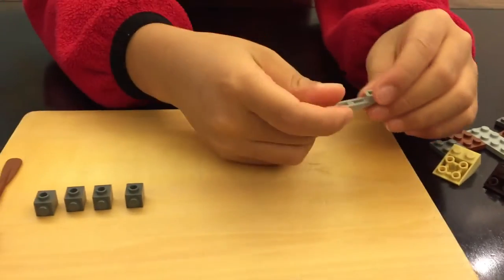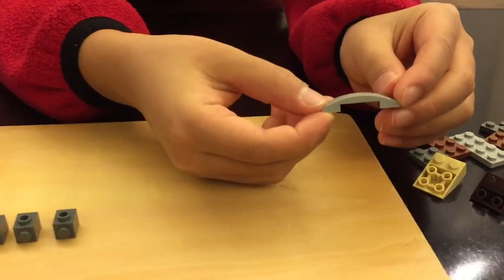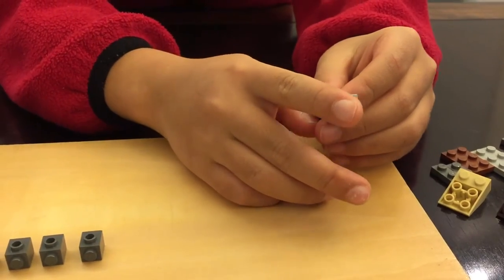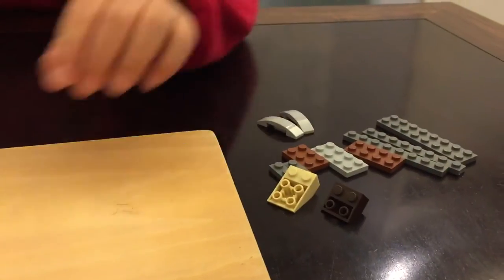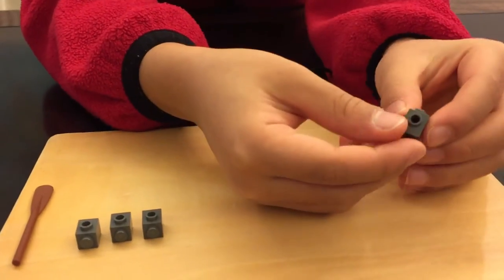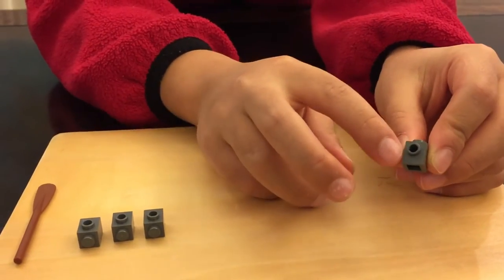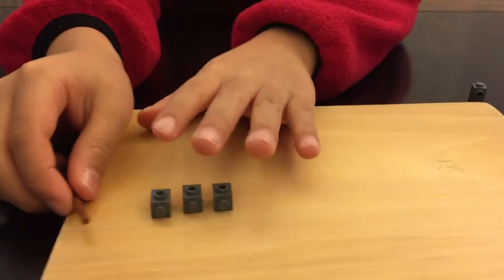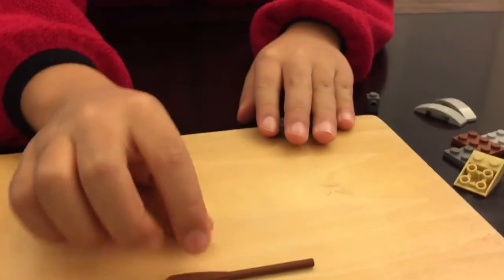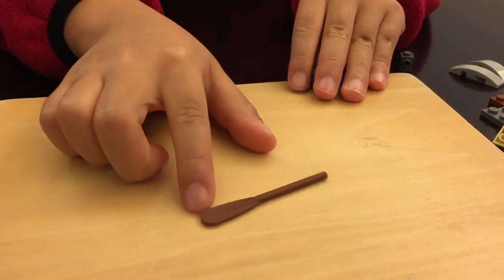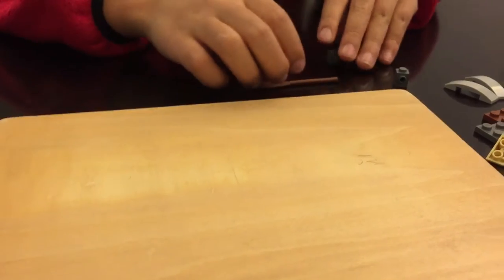And this one with the curved shape will be used for the curved side of the canoe. You'll need 2 of them. Then you'll need 4 of these pieces. It's like a normal Lego cube but it has an extra stud on the side. And then you'll need just 1 or 2 Lego paddles.